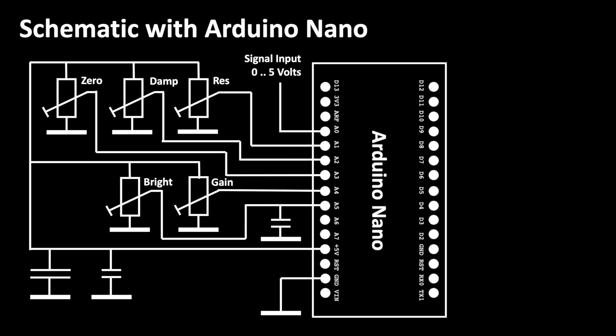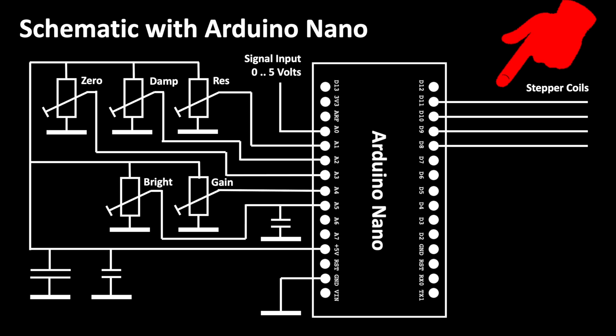The coils of the stepper are connected to the digital outputs D11, D10, D9 and D8. We can do this because our stepper motor coils each have a resistance of around 250 ohms. 5 volts divided by 250 ohms is only 20 milliamps of current.